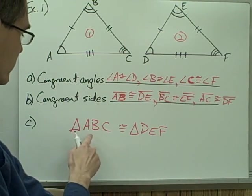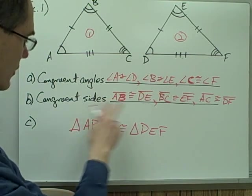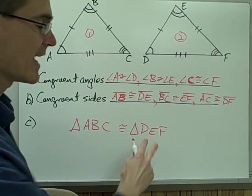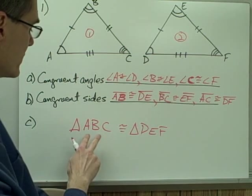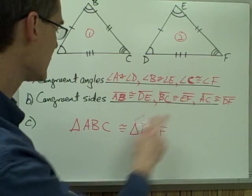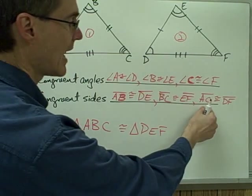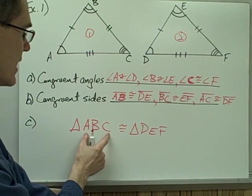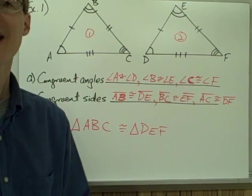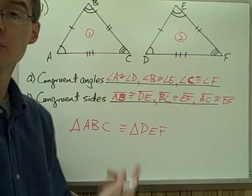Notice also segment AB is congruent to segment DE — these segments are in the same relative position when I write down my congruence statement. Segment BC and EF — those letters are in the same position. AC and DF — first and last here, first and last here. So we're going to see that over and over again every time we write down the congruence statement for two triangles.